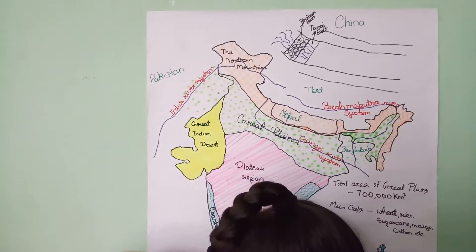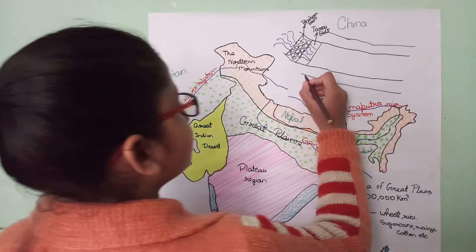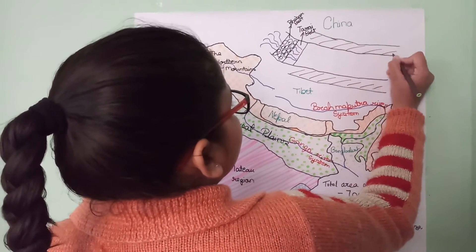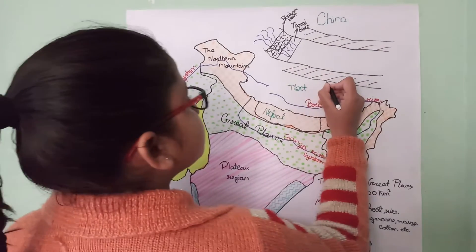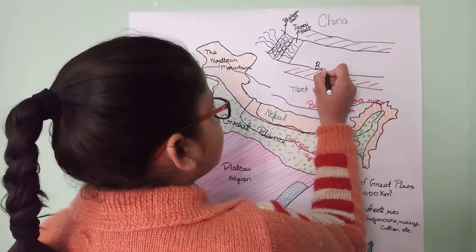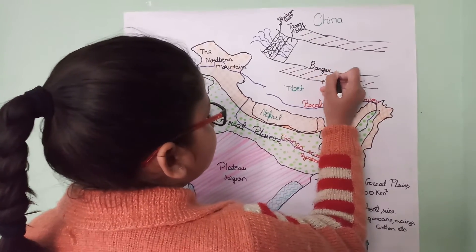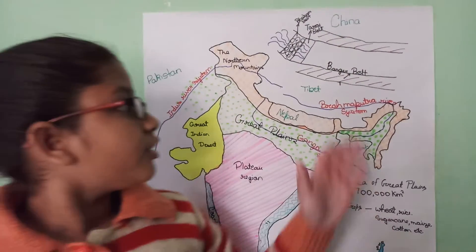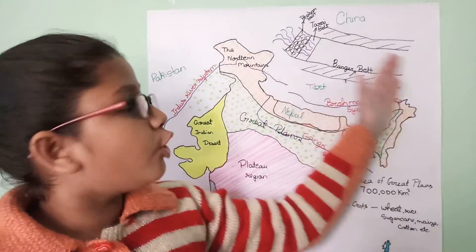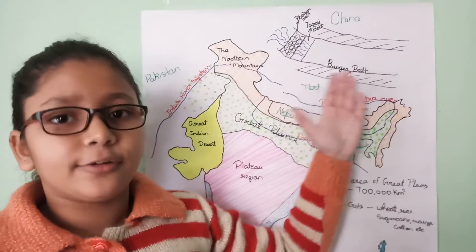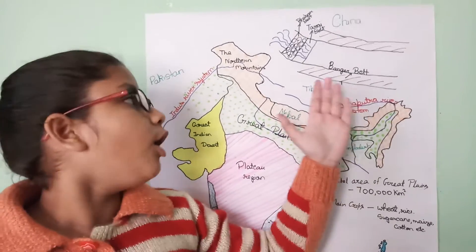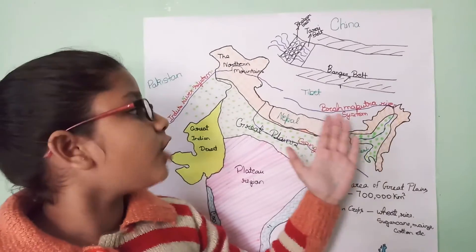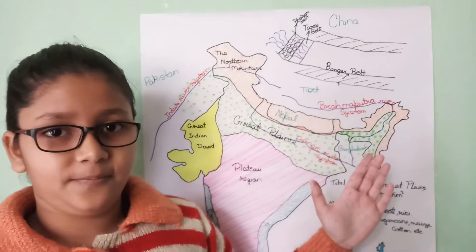Then, this is the Bhangar belt. When the rivers flow into the plains, they form alluvial terraces on their uplands — the flood plains. This belt consists of old alluvial soil.